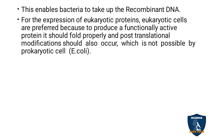For the expression of eukaryotic proteins, eukaryotic cells are preferred because to produce a functionally active protein, it should fold properly and post-translational modification should also occur, which is not possible in the prokaryotic cell E. coli. That is why a eukaryotic host is preferred to produce functionally active eukaryotic proteins.